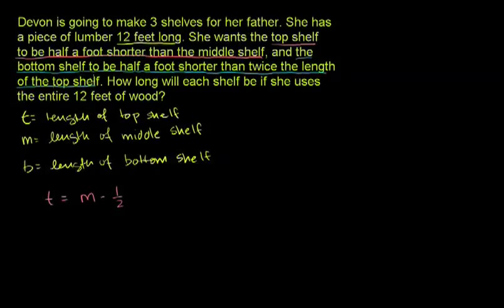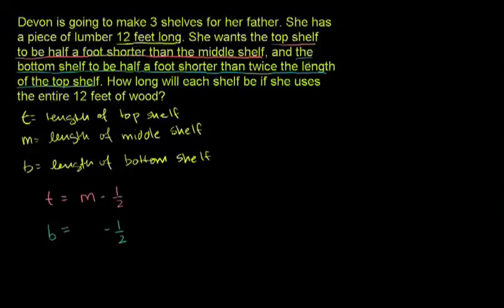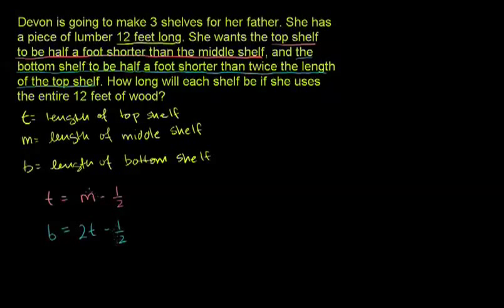Now the next statement: the bottom shelf needs to be equal to half a foot shorter than twice the length of the top shelf. So B equals 2 times T minus 1/2. These are the two statements interpreted in equation form: T = M - 1/2, and B = 2T - 1/2.